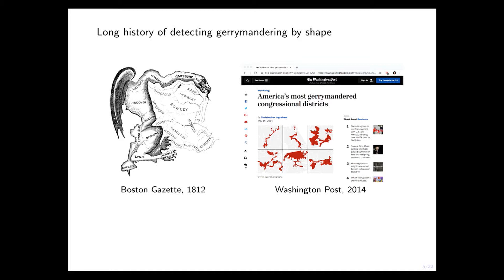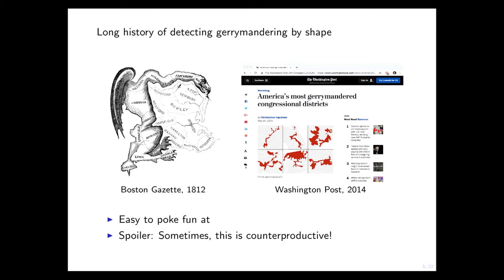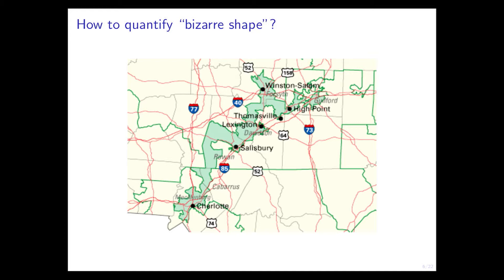The Washington Post recently was making fun of various districts for their shape. It's pretty easy to make fun of district shapes, but it's not necessarily productive — that's one of the themes of this talk. Before we can get there, let's think about what it means for a shape to be funny-looking. This North Carolina district is a funny shape because you walk along the perimeter and it jigs left and jags right, just to capture a certain amount of area. It seems to be wasting a lot of perimeter to capture that area.